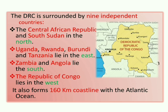The Democratic Republic of Congo is surrounded by nine independent countries. As you can see on the map, the Central African Republic and South Sudan lie to the north; Uganda, Rwanda, Burundi, and Tanzania to the east; Zambia and Angola to the south; and the Republic of Congo to the west.